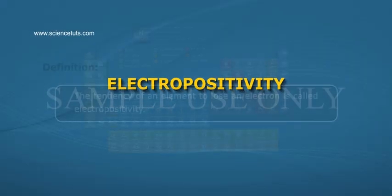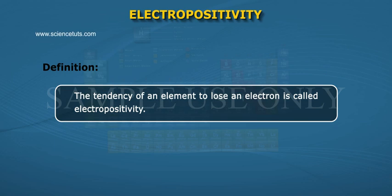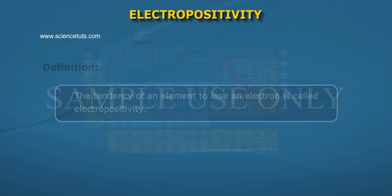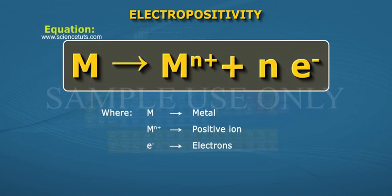Electropositivity Definition: The tendency of an element to lose an electron is called electropositivity. Equation: M gives rise to Mn+ plus ne-, where M is metal, Mn+ is positive ion, and e- is electrons.